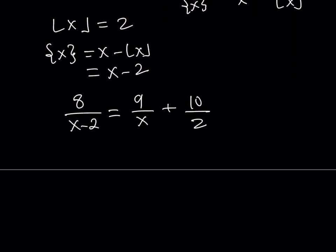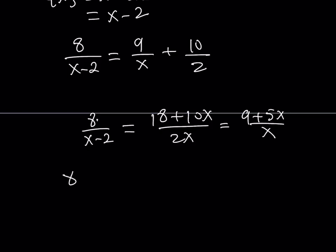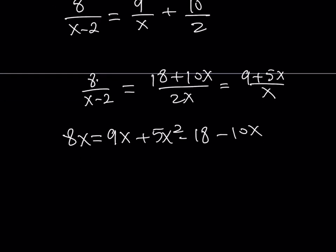Simplifying to 8 over (x minus 2) equals (9 plus 5x) over x, then cross-multiplying: 8x equals 9x plus 5x squared minus 18 minus 10x. Rearranging gives 5x squared minus x minus 18 equals 0. Wait — collecting terms: 5x squared plus (9 − 8 − 10)x minus 18 = 5x squared minus 9x minus 18 equals 0.